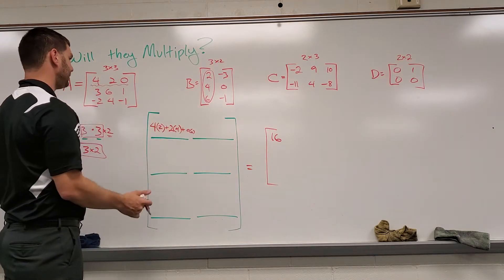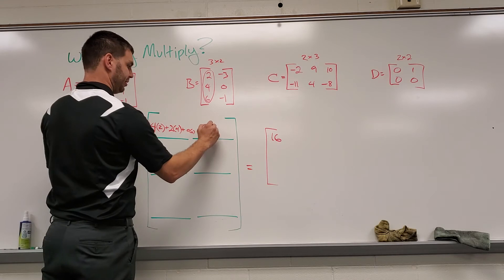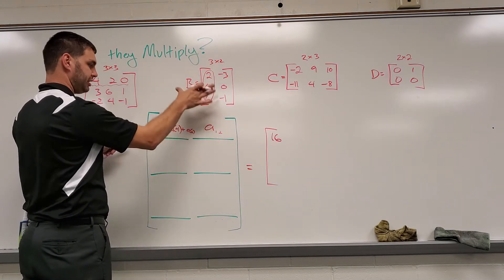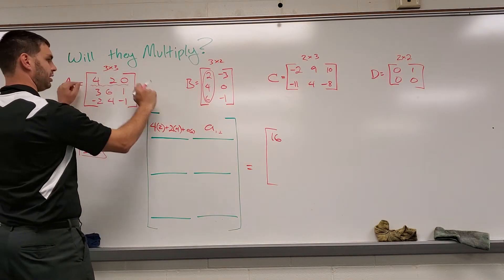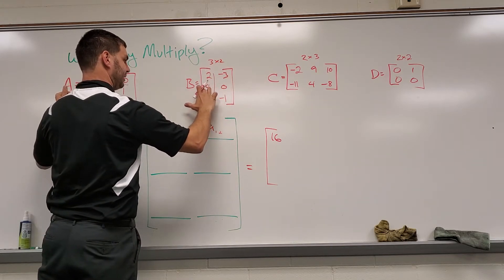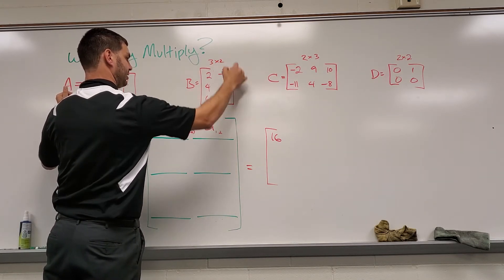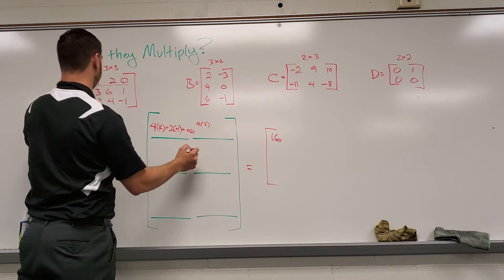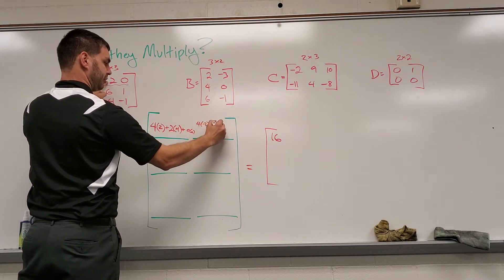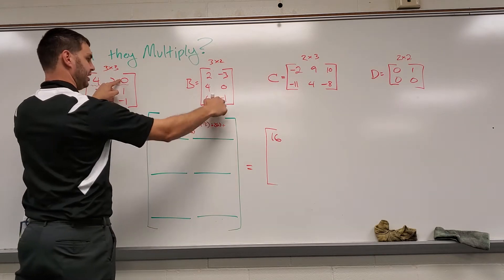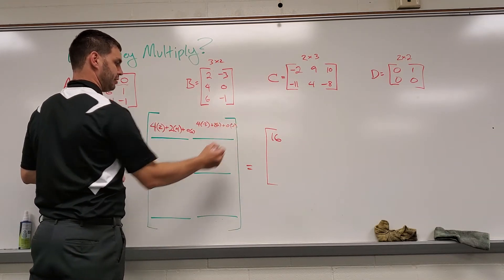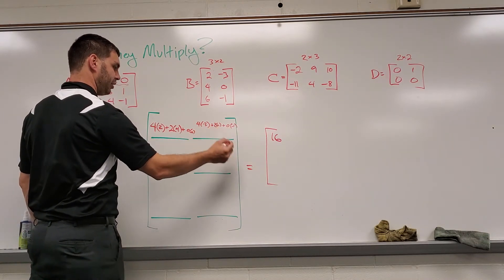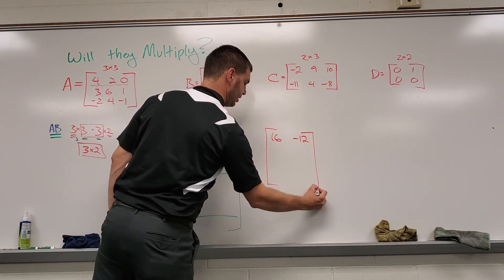The next spot is going to be, it's still, if you think about this, it's going to be A sub one two, for the first row, second column. So for that, I have to take my first row, but over here, I'm going to multiply it times the second column. So again, four times negative three is what I'm thinking, plus two times zero, plus zero times negative one. If I do the multiplication and addition here, we have negative 12 plus zero plus zero is just negative 12 in that top right spot.